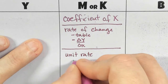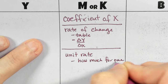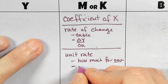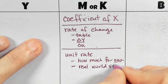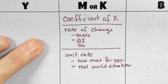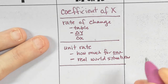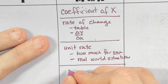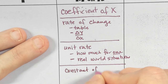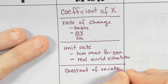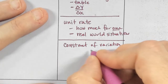Unit rate is how much for one, and we actually see unit rate a lot in real-world situations. We also called it the constant of variation, or the constant of proportionality.